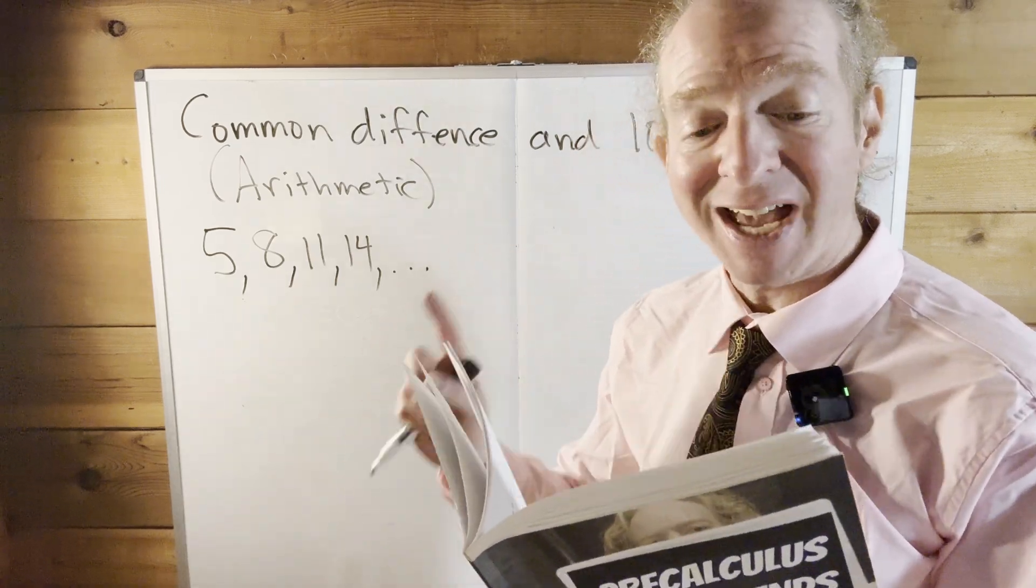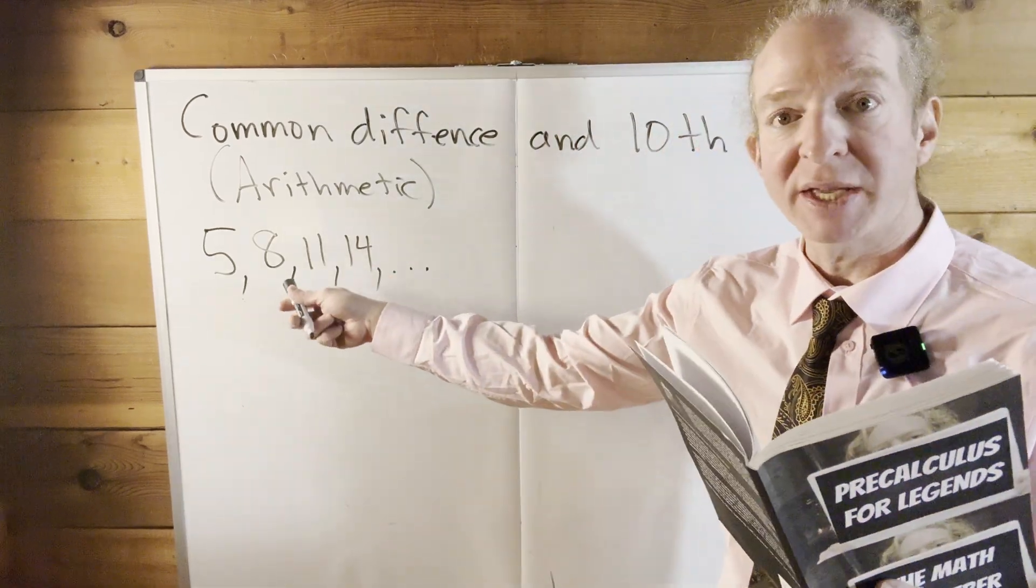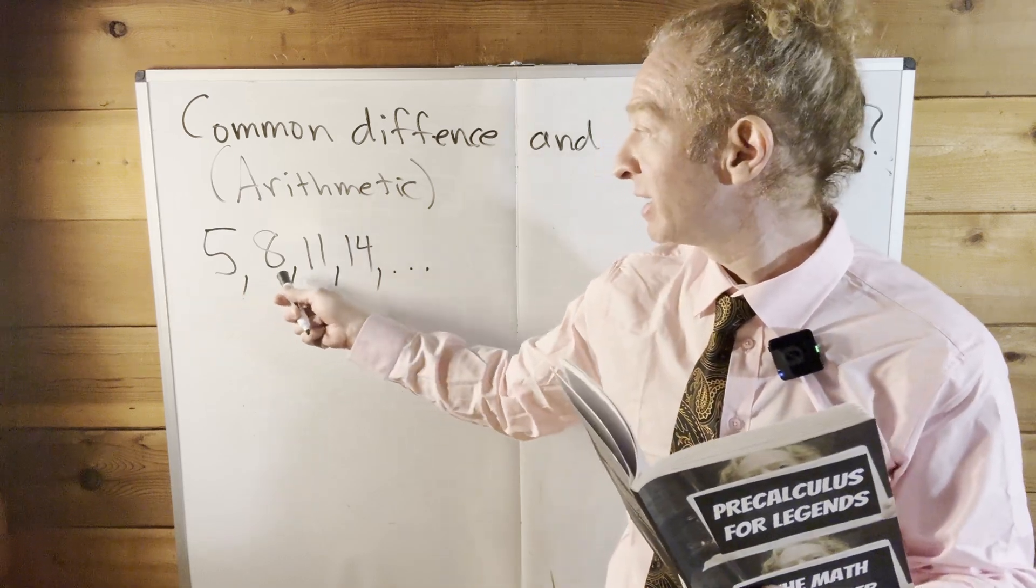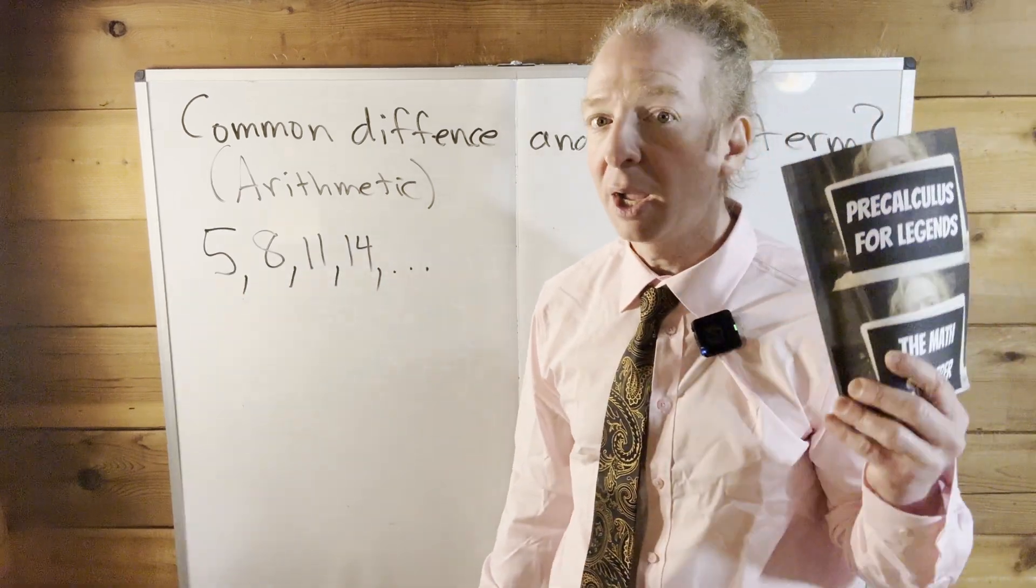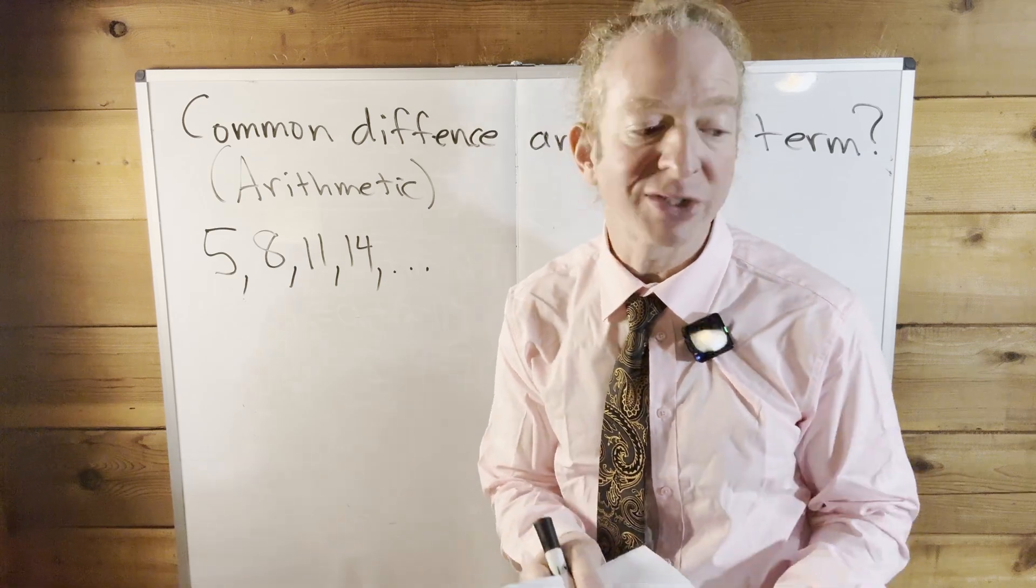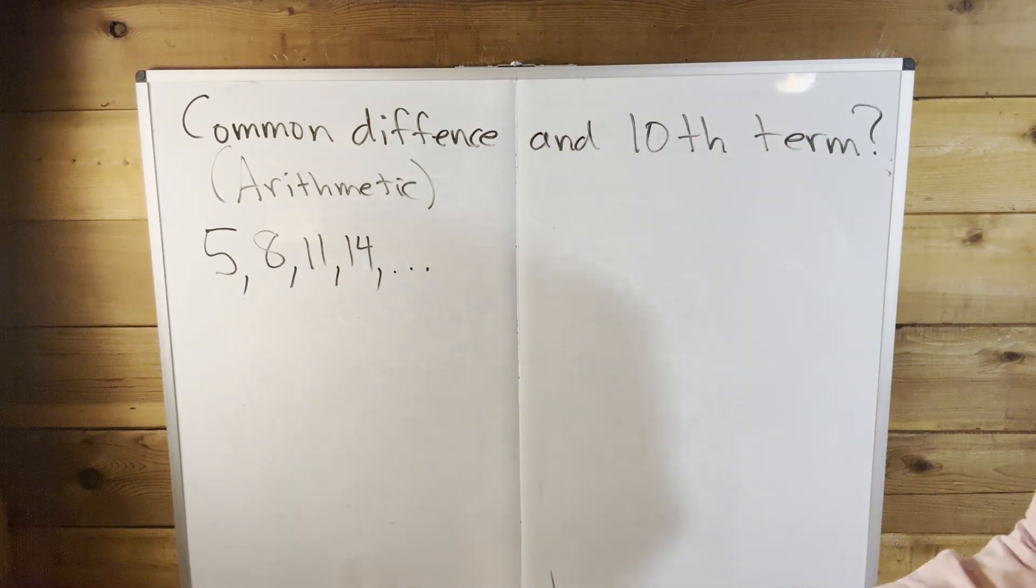The question says, find the common difference and the 10th term of the arithmetic sequence 5, 8, 11, 14, dot dot dot. This is an example from my book, Pre-Calculus for Legends. Let's go ahead and carefully work through it.